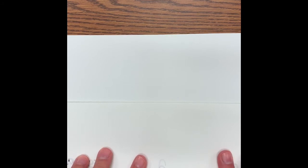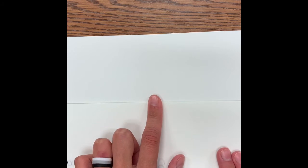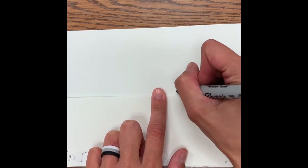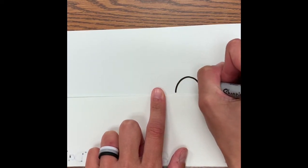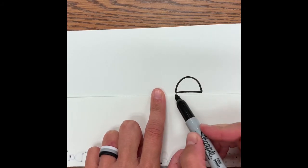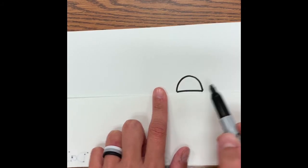I want you to find where you believe about the middle of the paper is. This does not have to be perfect, just a good guess of where the middle is. And on one side we're going to draw our eye.